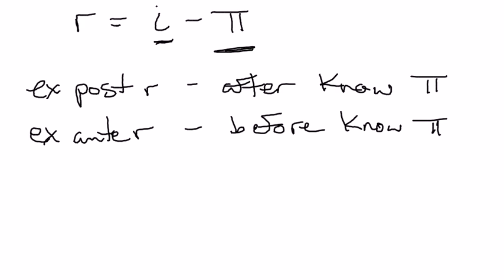You can think of 'ante' like ante up in poker, where you're putting money in the pot before you actually get your cards. Here, the ex-ante real interest rate is the real interest rate you expect to pay — it's the real interest rate before you actually know what the inflation rate is going to be over the life of your loan, in this case one year. So there are two different types of real interest rates: the ex-post real interest rate, which is the interest rate that you actually do pay, and the ex-ante real interest rate, which is the interest rate you expect to pay.